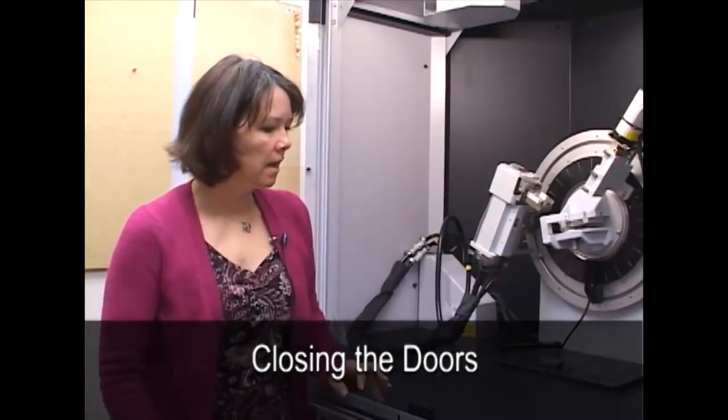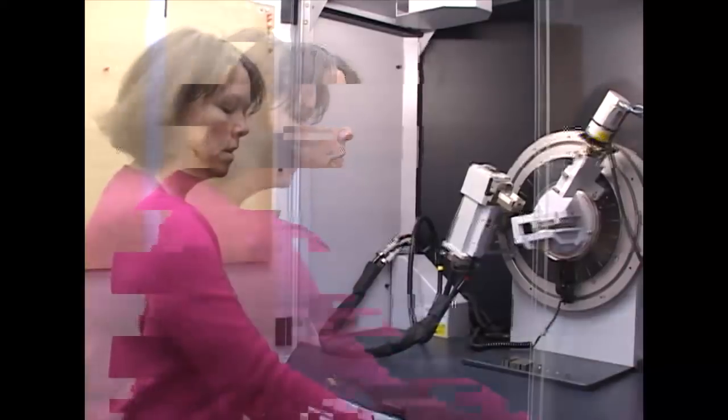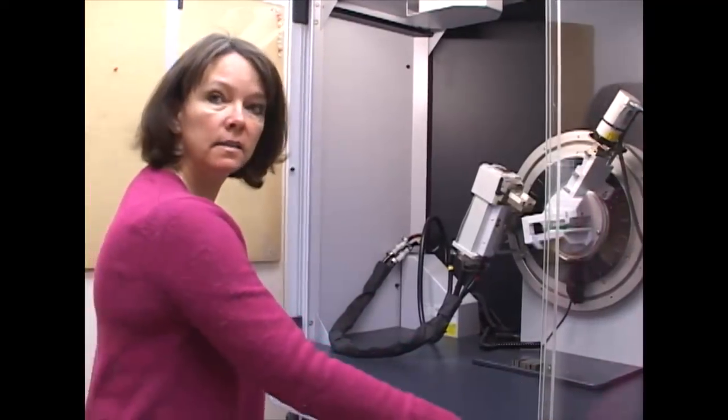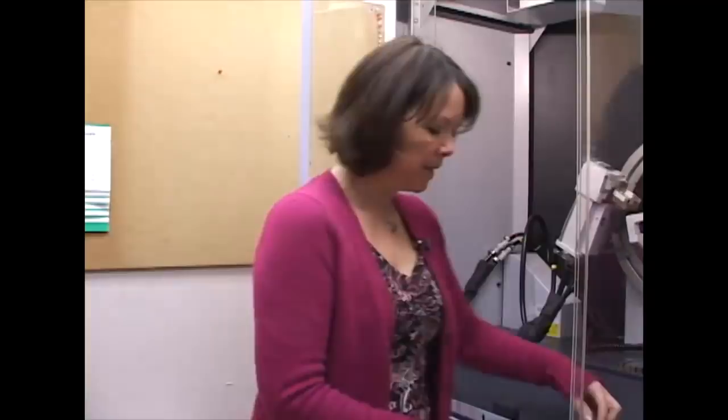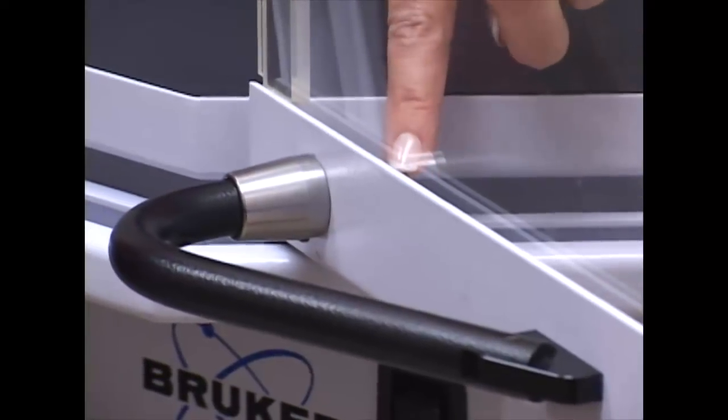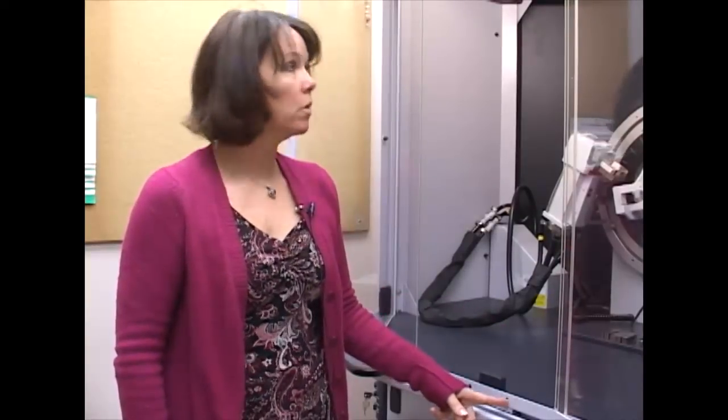Once your sample is loaded, you can close the doors. The doors are leaded glass and are part of the safety circuit in the instrument. So we are generating x-rays and those are radiation and could be dangerous. Radiation doesn't travel very far, it doesn't travel through thick objects and it doesn't travel through lead. So these are leaded glass and they have little pins in the handles that will engage mechanical switches in this, right in here, in the door.